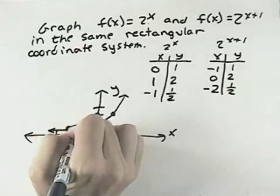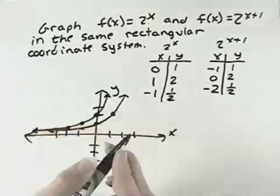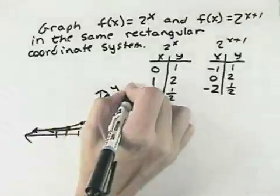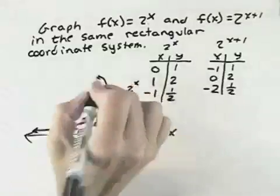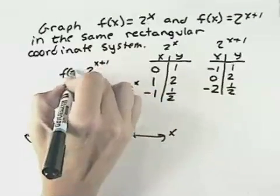So what happens now is our second graph is over here, one unit to the left of our first one and still approaching the same horizontal asymptote. So here we have the graph of 2 to the x, and the one that's shifted 1 over from that is 2 to the x plus 1.